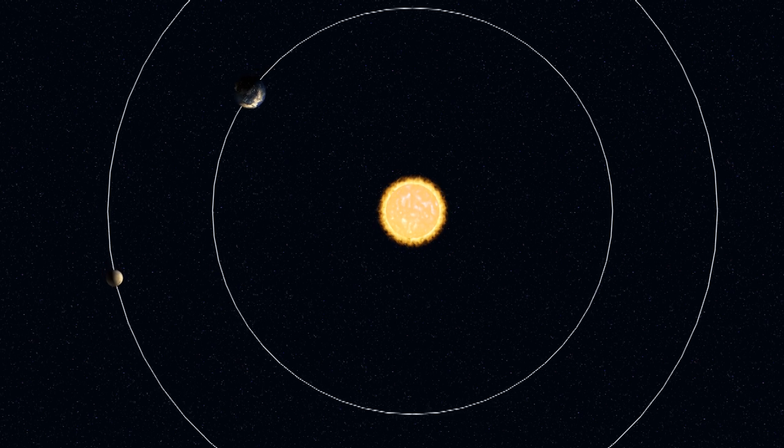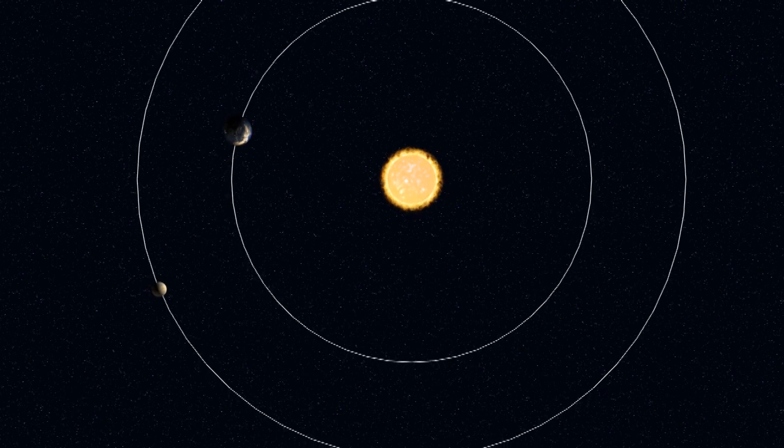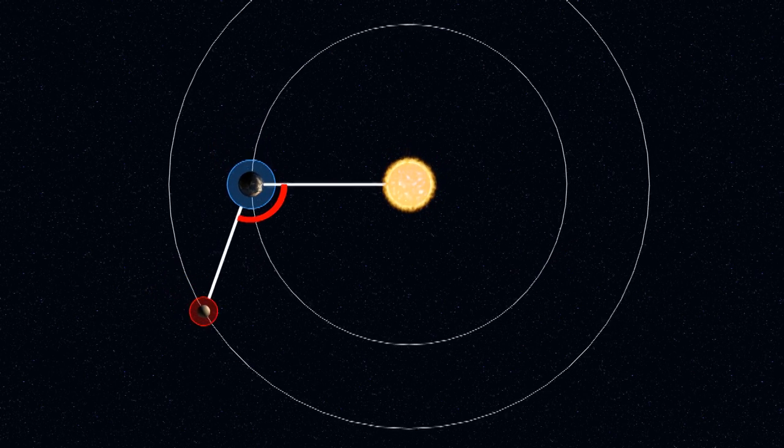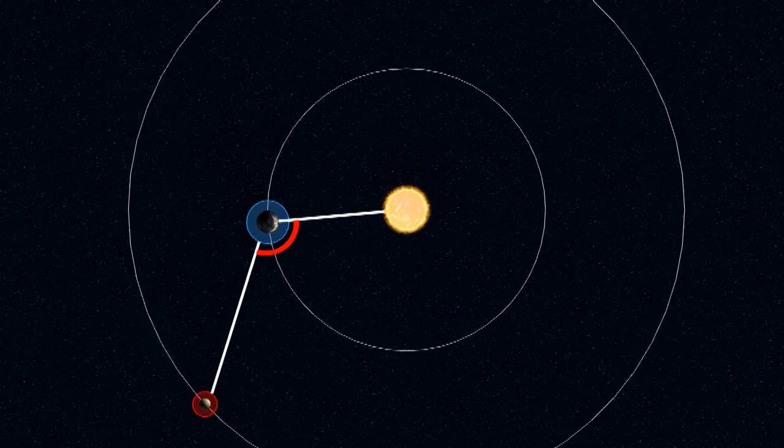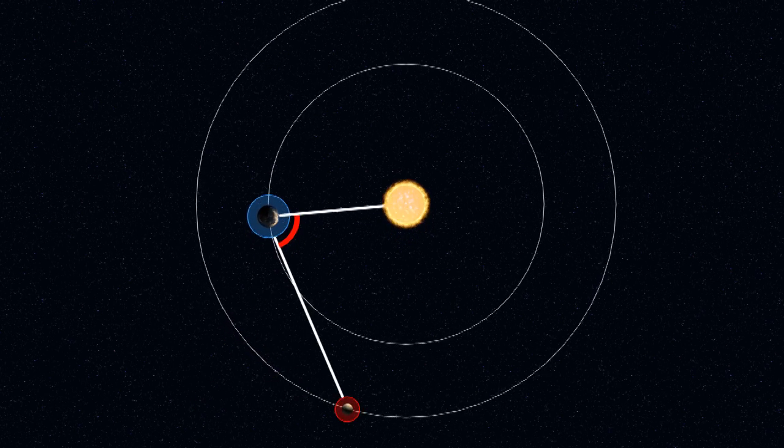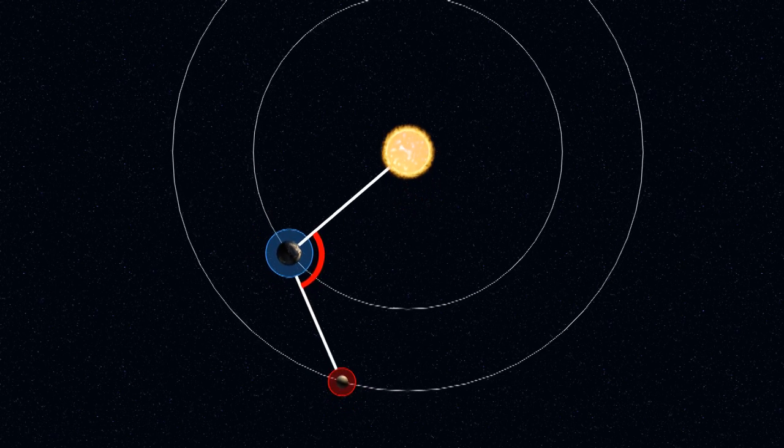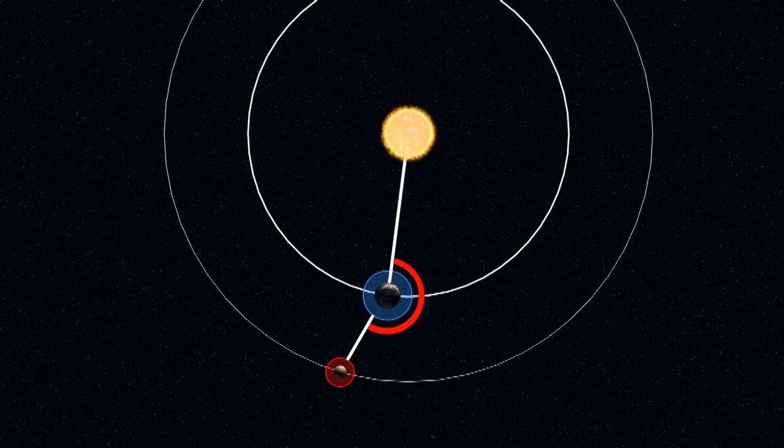It was hard because he only had one data point to work with. The angle between Earth, Mars, and the Sun. He didn't know the distance to Mars or how much of the motion was caused by Mars moving and how much was caused by the Earth. But he found a way to isolate the motion of the Earth.